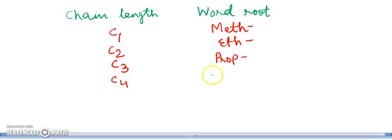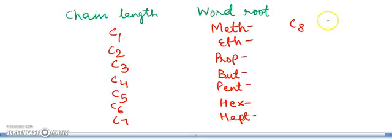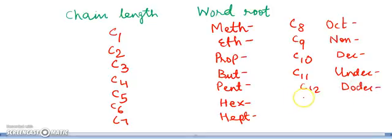Continuing the word root table: C4 is but, C5 is pent, C6 is hex, C7 is hept, C8 is oct, C9 is non, C10 is dec, C13 is tridec, C14 is tetradec. Likewise, the word root table continues for higher carbon chains.